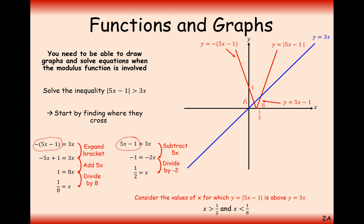We need the final answer as an inequality. We're looking for where the red modulus graph is on top of the blue line. That happens in two regions: beyond x equals a half on the right, and below x equals an eighth on the left. So the final answer is x greater than a half or x less than an eighth.